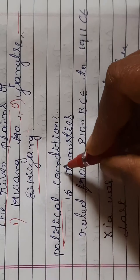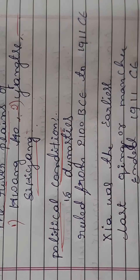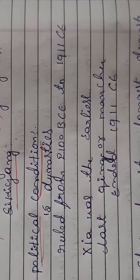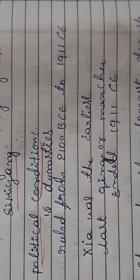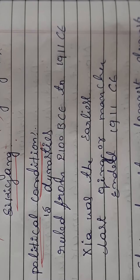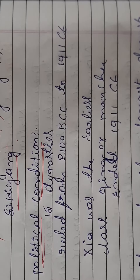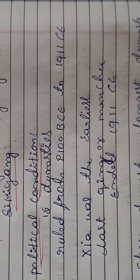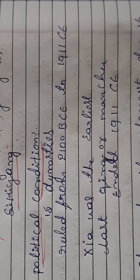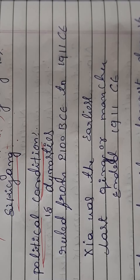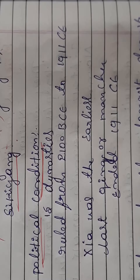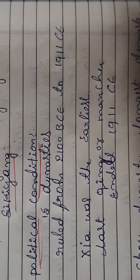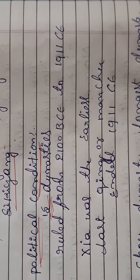Let us study about the political condition. What is the political condition of this dynasty? Early China was ruled by many kings. In the Chinese civilization, many dynasties were ruled. Beginning from early stages they had a loose federation, and in the later stages they centralized administration. More than 15 dynasties ruled China.